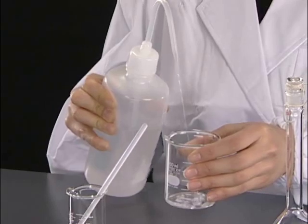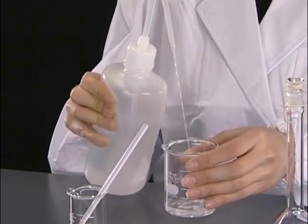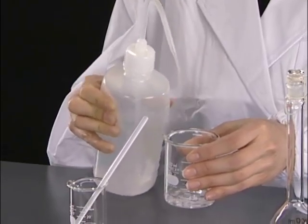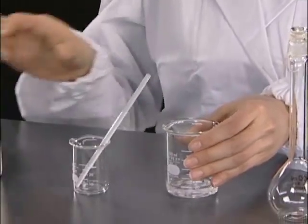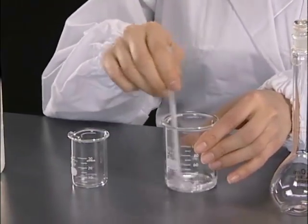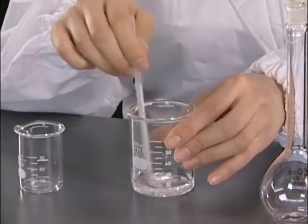First, add an appropriate amount of distilled water to the beaker containing the solid sample precisely weighed. Dissolve the sample completely using a stirring stick.